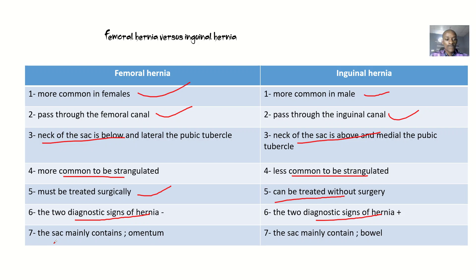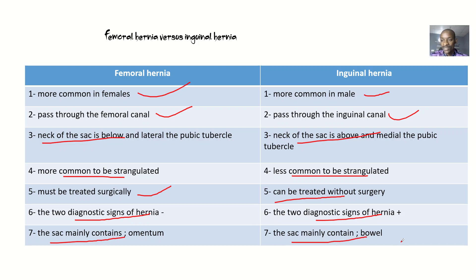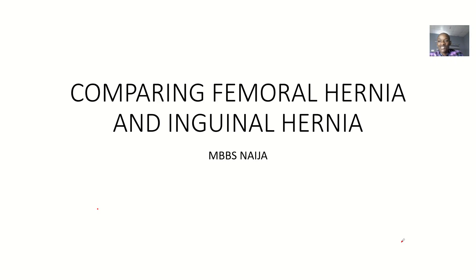The sac in femoral hernia mainly contains omentum — meaning the omentum is the most likely abdominal structure to bulge out in femoral hernia. In inguinal hernia, it is the bowel — the intestines — that are most likely to bulge out. So that's the key difference between femoral hernia and inguinal hernia. See you guys.